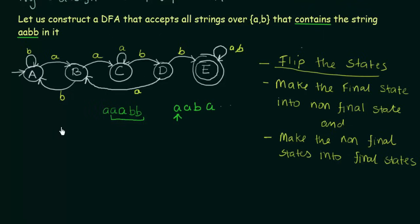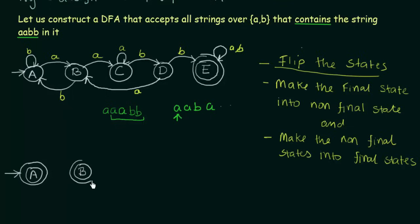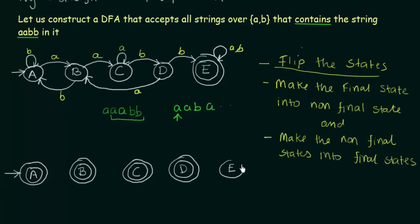Let's see how we can do this — it is very simple. All the states that are not final states — A, B, C, and D — we make them final states. And the last state E, which is a final state, we make it a non-final state. State A was a non-final state, so I make it a final state by putting a double circle around it — and it is still the starting state. State B was also not a final state, so I make it a final state with a double circle. State C was also a non-final state, I make it a final state. State D was also a non-final state, I make it a final state. And state E was a final state — I make it a non-final state with only one circle.